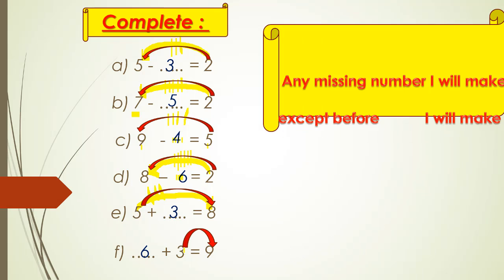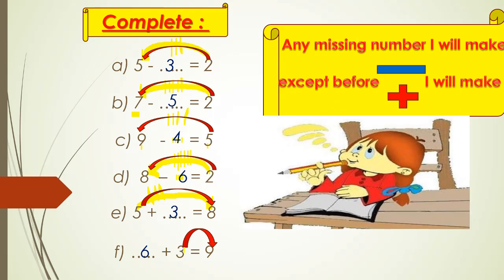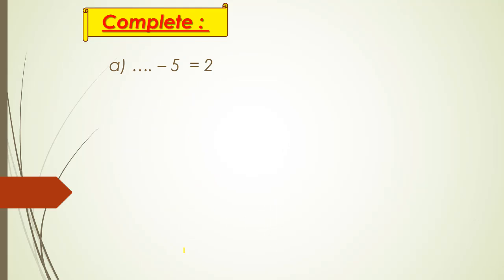Don't forget my students: any missing number I will make minus — except before and minus. Here the missing number is before a minus, so I will make plus. Five plus two — big in my mind, small on my finger — after five: six, seven — so it will be seven.